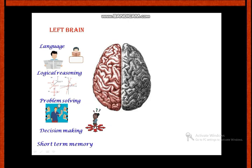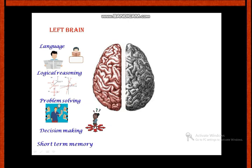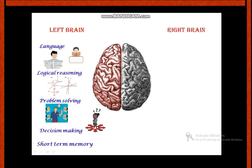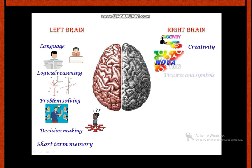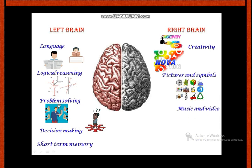Now let's look at the right side brain. The first function is creativity. If you think creatively, you can do innovations using the right brain. The right brain also processes pictures, symbols, and images. Music and videos are also processed using the right brain.